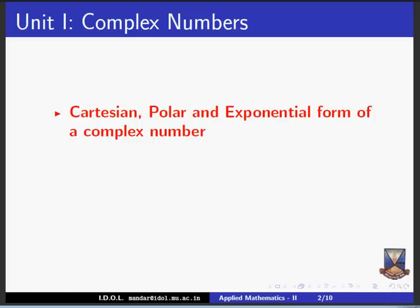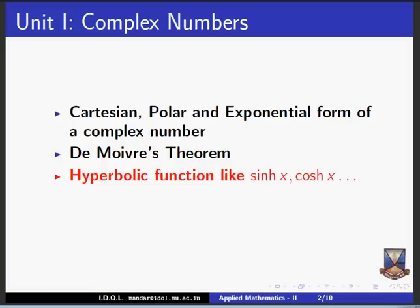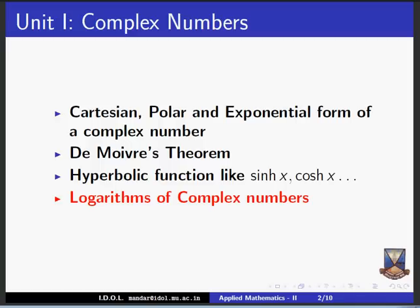There are six units. Unit one, complex numbers, consists of an introduction to the complex number system, Cartesian form, polar form, and exponential form of a complex number. Then De Moivre's theorem. We are going to study hyperbolic functions, specifically sine hx and cos hx, and finally, logarithms of complex numbers.